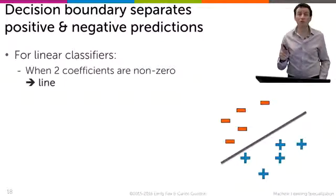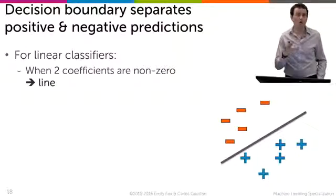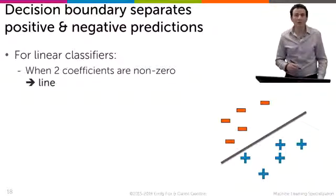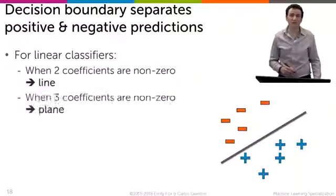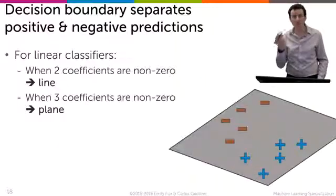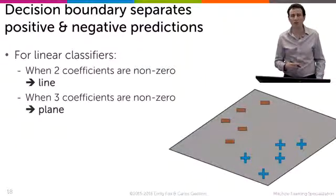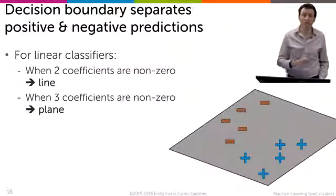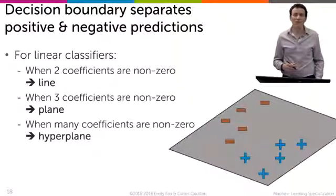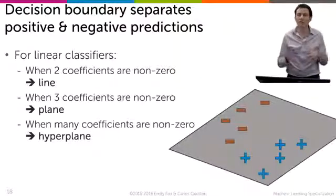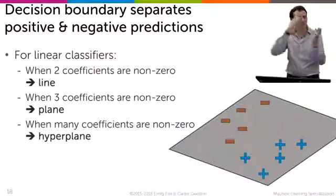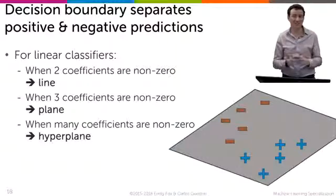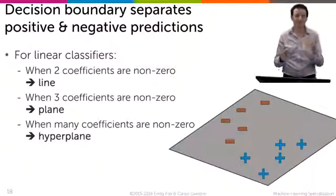With two features or two coefficients, our decision boundary is just a line in a 2D plane. In general, we might have more coefficients. With three features that have non-zero coefficients, we have a plane trying to separate the positive points from the negative ones. With more than three non-zero coefficients, we're in higher-dimensional space, and we call that a hyperplane separating the positives from the negatives.